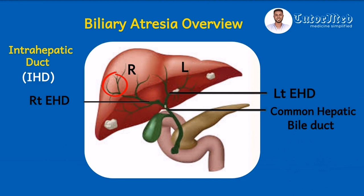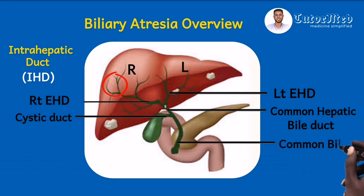The gallbladder temporarily stores bile and releases it when there is fat in the duodenum. The cystic duct joins the common hepatic bile duct to form the common bile duct, which together with the pancreatic duct drains into the duodenum. These biliary channels need to be patent to ensure free flow of bile into the duodenum. In biliary atresia, there is a blockage in this extrahepatic pathway.